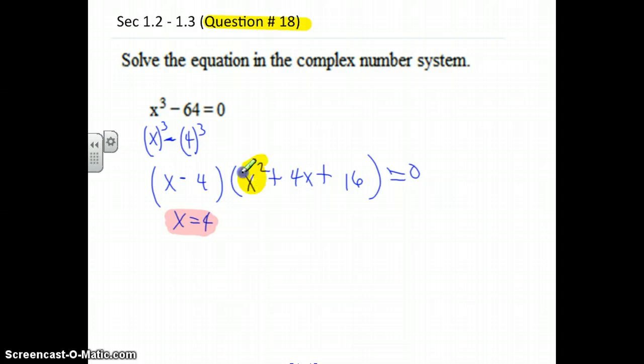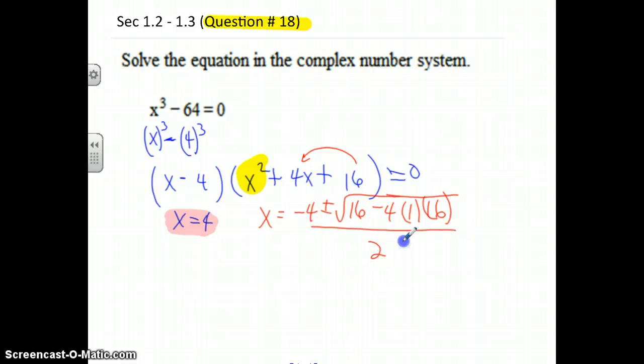So here I go. x is equal to negative b plus or minus the square root of b squared minus 4 times a times c, all divided by 2 times a.